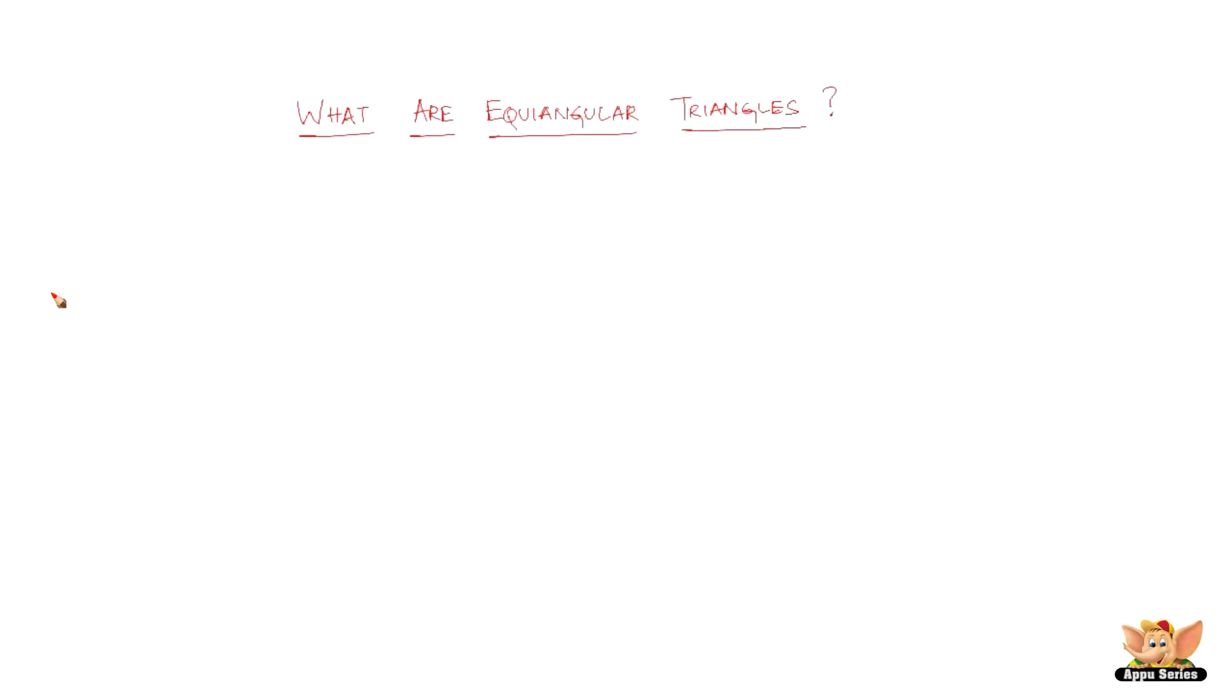In this video, let's look into what are equiangular triangles. Two triangles are said to be equiangular if their corresponding angles are equal. Let me show you with examples.